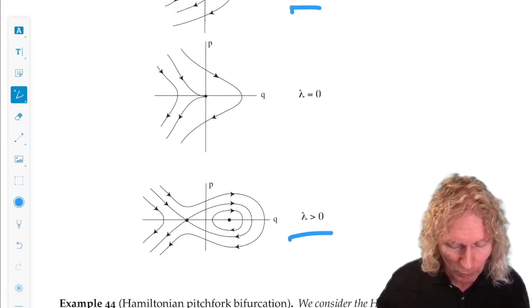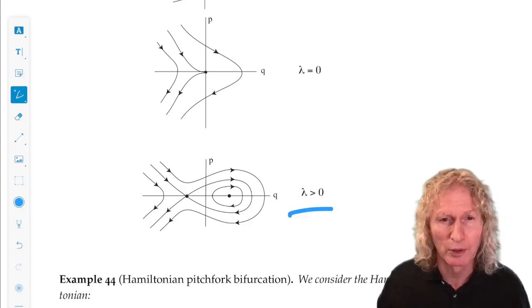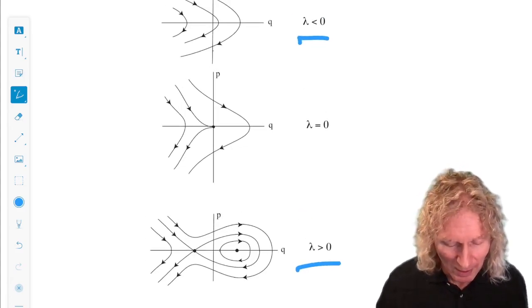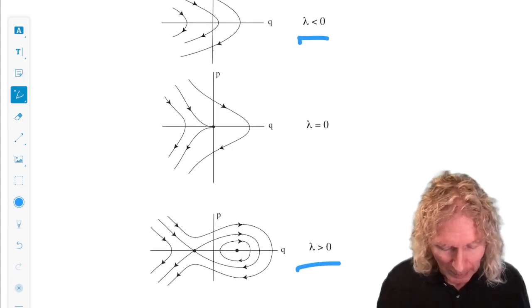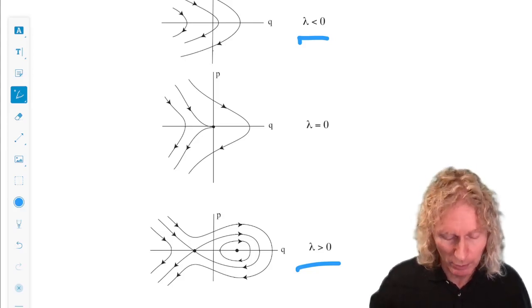And that splits up into a center and a saddle. We get this fish-like structure. This is the classic Hamiltonian saddle node, the fish-like structure. So we have a hyperbolic point with a homoclinic orbit connecting it to itself, bounding a region of periodic motions.